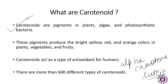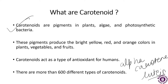Carotenoids must be consumed through the diet and are best absorbed through a source of fats. Foods that are rich in carotenoids include spinach, watermelon, tomatoes, carrots, mangoes, and more.